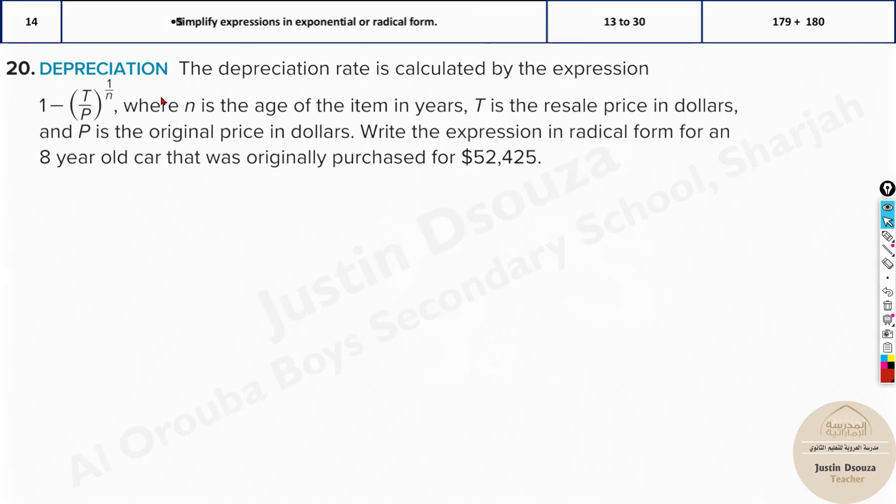Another real world problem on depreciation. The depreciation rate is calculated by this expression, where n is the age of the item in years, t is the resale price in dollars, and p is the original price in dollars. Write the expression in radical form for an 8-year-old car that was originally purchased for $52,425. Now, here, this is an exponential, right? Let's write over here. What do we know? Do we know what is the resale price? No. Let that be in t itself. We know this price. That is $52,425.